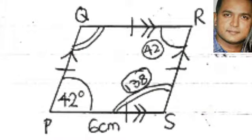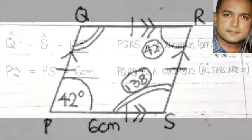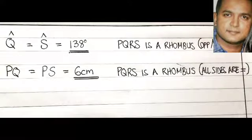If we remember, we did say that all sides of a rhombus are equal. With this in mind, we can now say that PS equals PQ equals 6 centimeters. The reason will be PQRS is a rhombus with all sides equal.